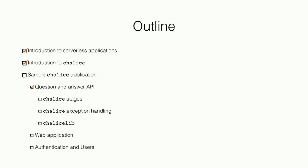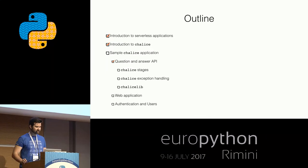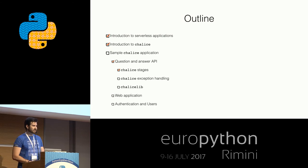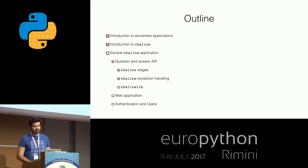Key learnings from this section: Chalice stages allow you to group resources into different stages so you don't interfere with existing deployments — experiment with a dev stage while keeping prod running. Chalice exception handling lets you raise built-in exceptions like NotFoundError or BadRequestError to propagate specific HTTP status codes back to the user. And chalicelib lets you outgrow your app.py file by creating your own modules in a chalicelib directory.